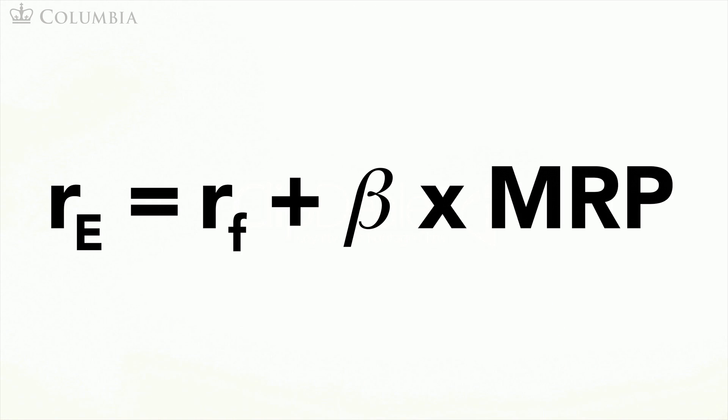Here is the CAPM equation. It says that the expected return is the risk-free rate plus beta times the market risk premium. We therefore need estimates for these three inputs: the risk-free rate, Walmart's beta, and the market risk premium.